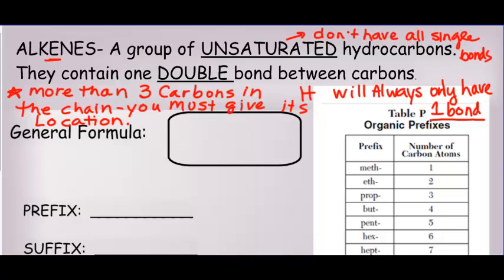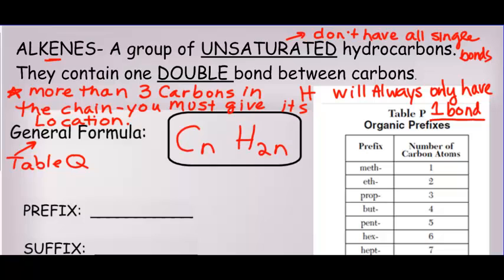The general formula of an alkene — remember, you can get that from Table Q. The number of hydrogens is always two times the number of carbons. So they always have twice as many H's as C's. For example, if you had four carbons, then you would have eight hydrogens. The H's are always double the C's.